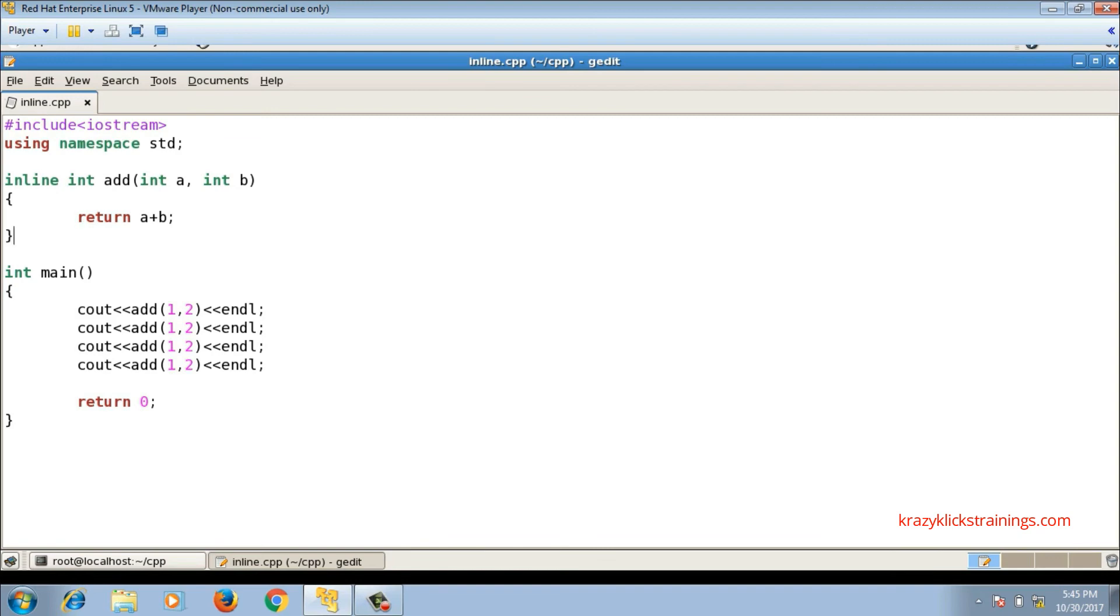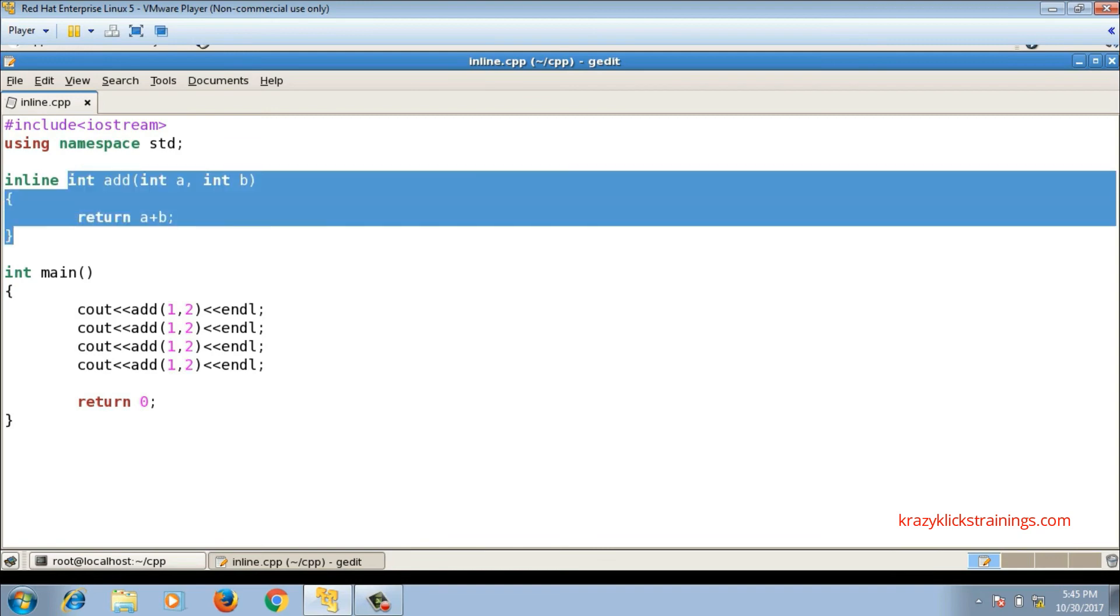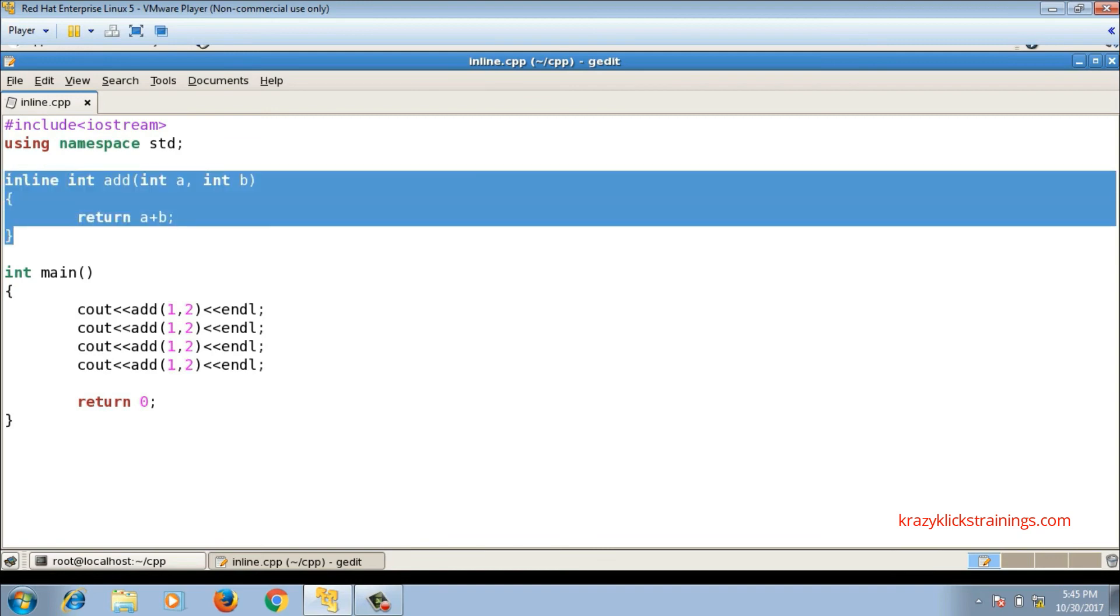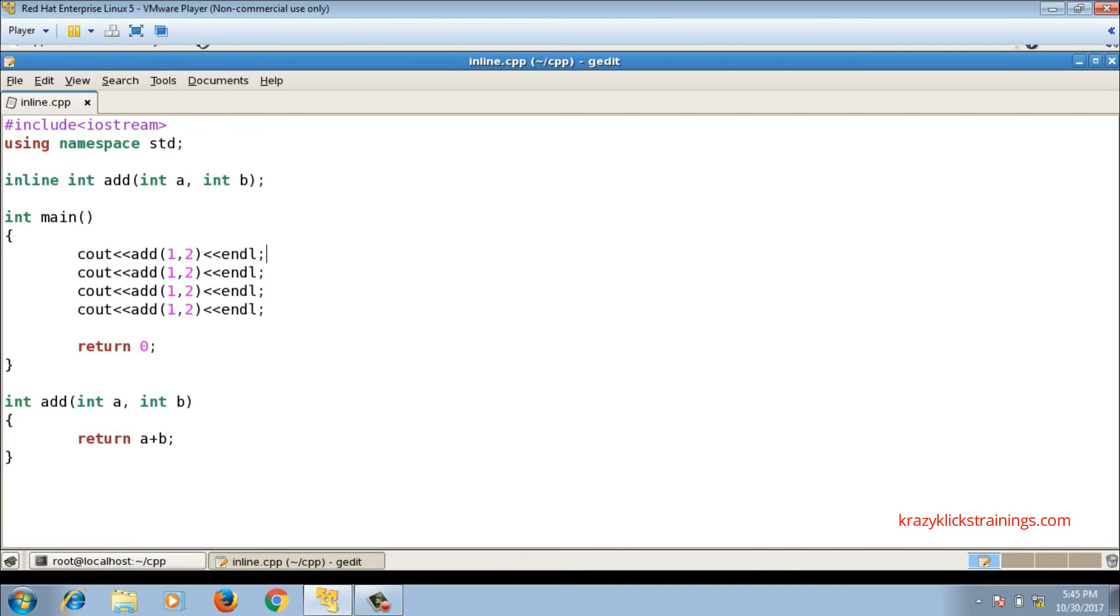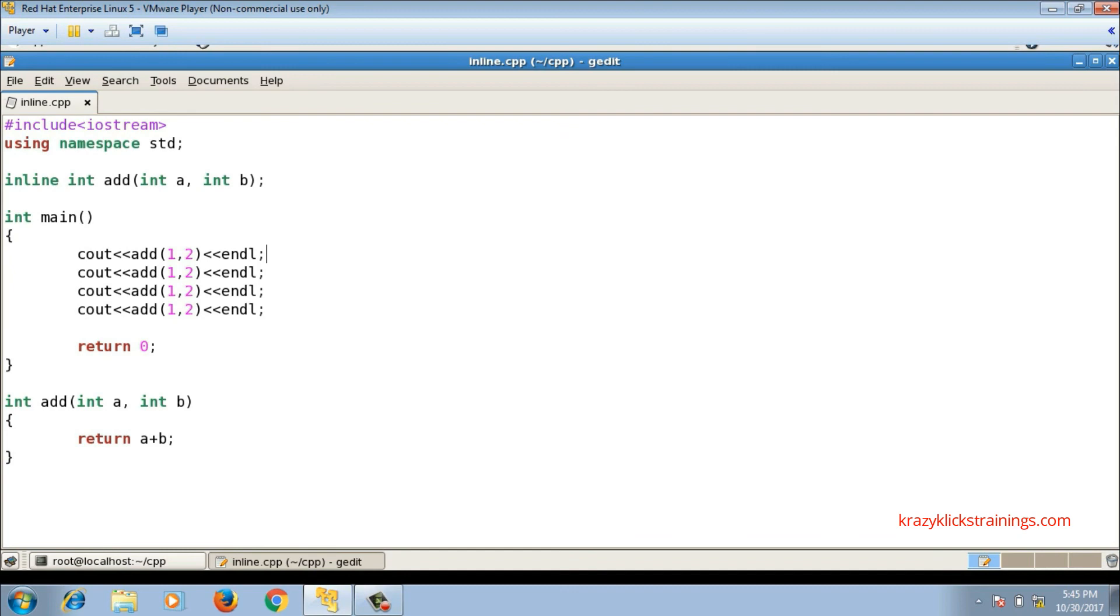Now if I have both the things like function definition and function declaration separate, then in that case I will write the inline keyword in the declaration and not in the definition. So here I will implement code like this, compile, run. It is working, so this is how we write inline functions.